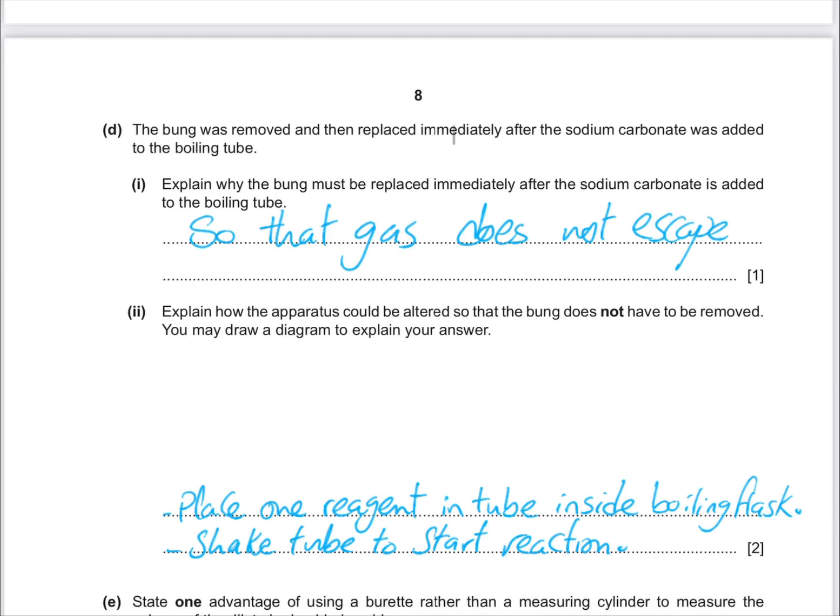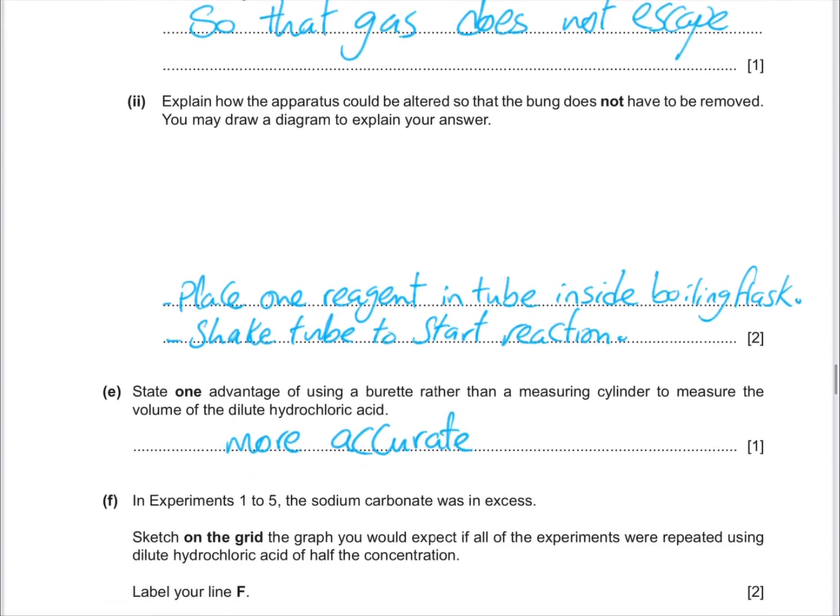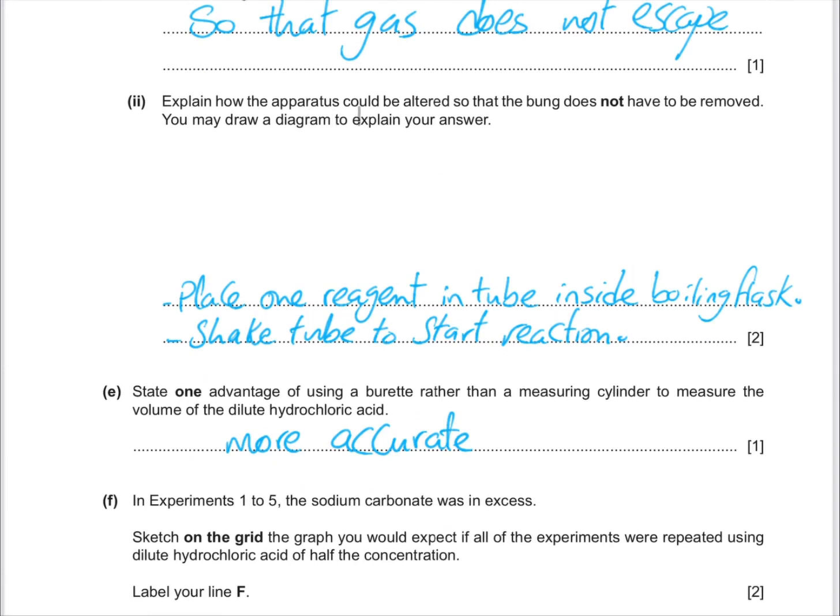The bung was removed and then replaced immediately after sodium carbonate was added to the boiling tube. The bung must be replaced immediately after the sodium carbonate is added to the boiling tube. We're going to put the bung immediately so that the gas won't escape. The bung doesn't have to be removed.